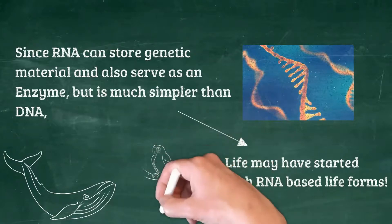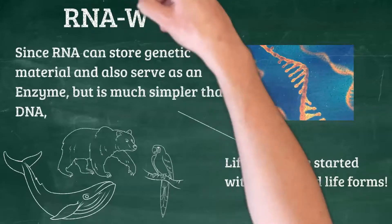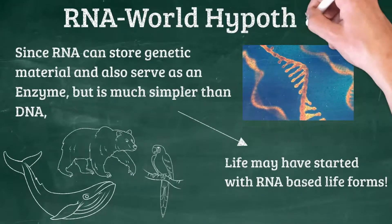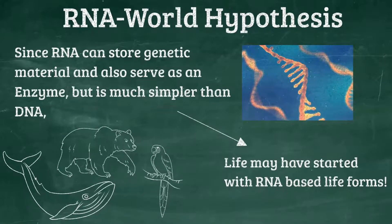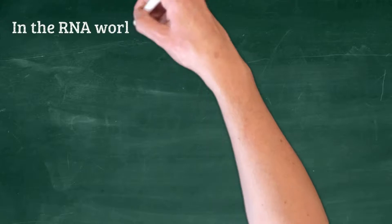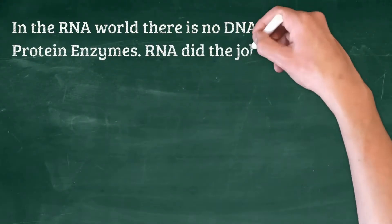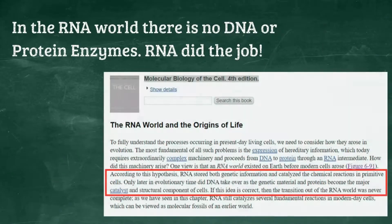And hence, evolutionary theorists proposed a hypothesis that life started based on RNA in a world that did not have DNA and did not have proteins. The genetic information, the enzymes, both are RNA based. But is this possible?